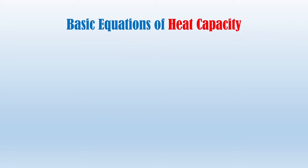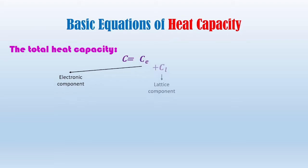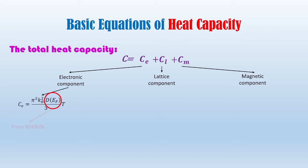Basic equations of heat capacity. The total heat capacity is a contribution from three components: electronic, lattice, and magnetic. The electronic heat capacity is calculated by simulating the electron density of states at Fermi energy by Wien2K software.